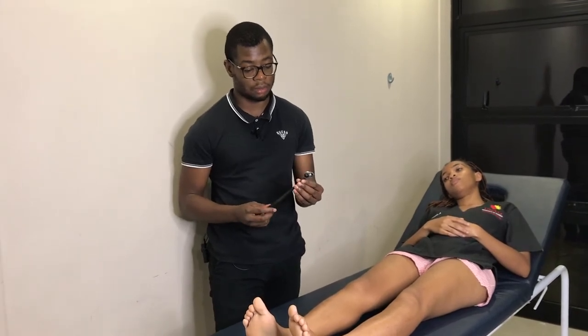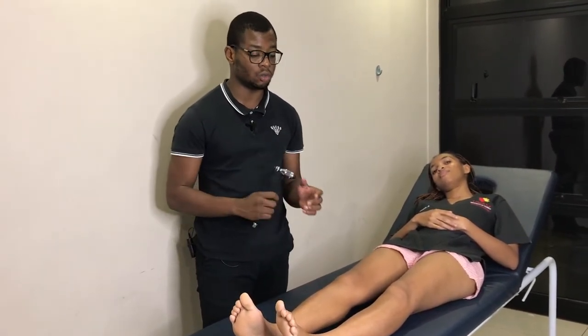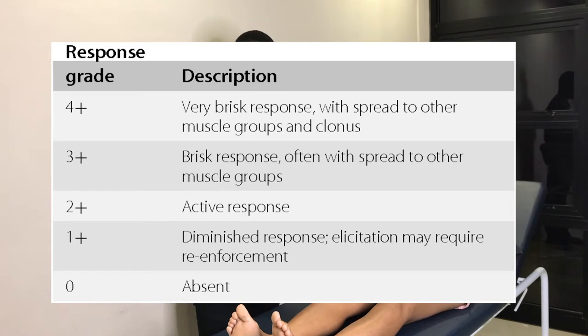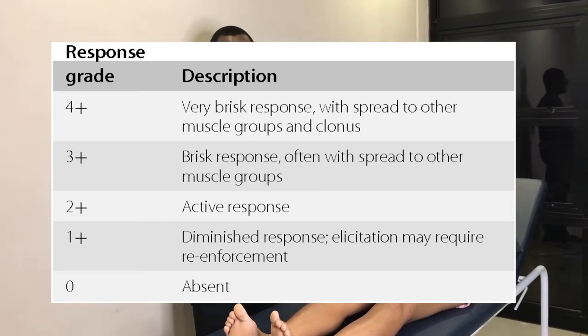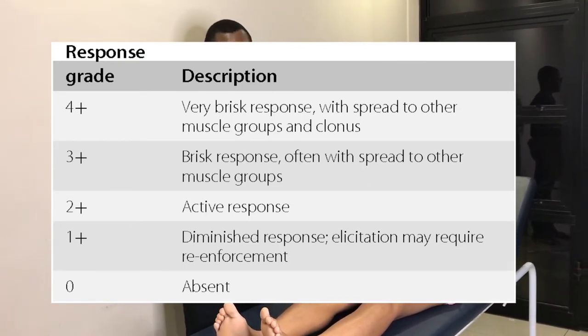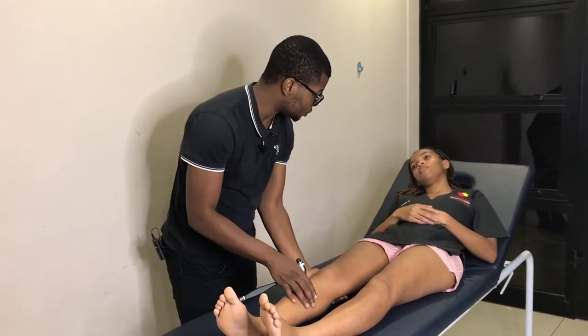Moving on to reflexes. Make sure you are using a standard patellar hammer — this is one from Lago Medical. These lighter ones do not elicit reflexes very well. The grading of reflexes: zero is absent, one plus is reduced, two plus is normal, three plus is increased or brisk, and four plus is typically when it is associated with clonus. Now I'll just lift you up to relax.